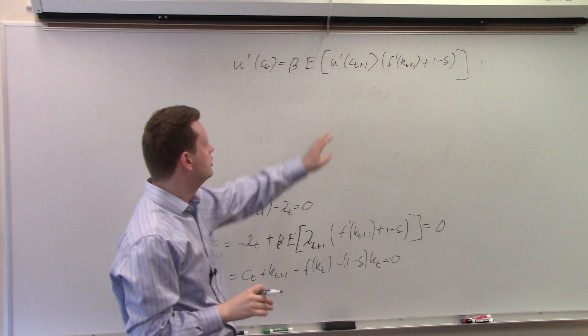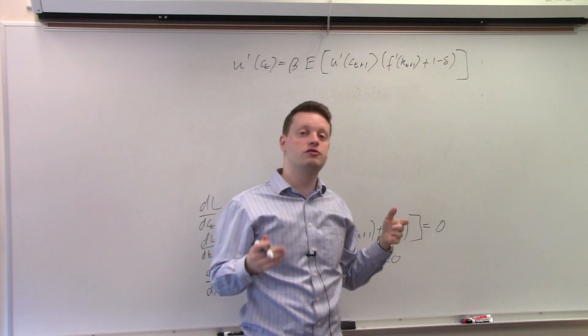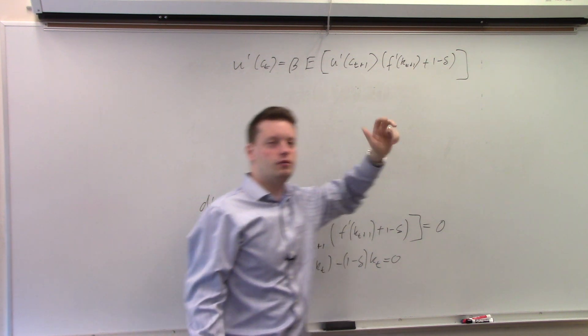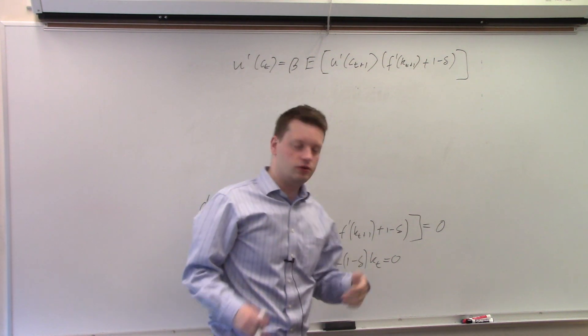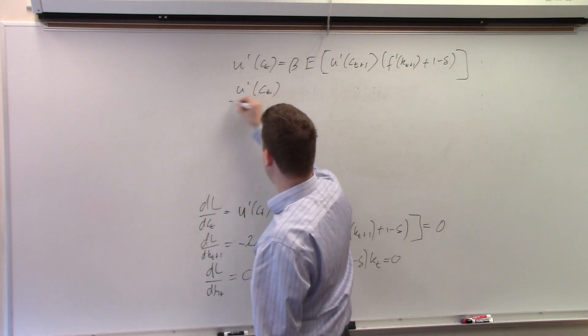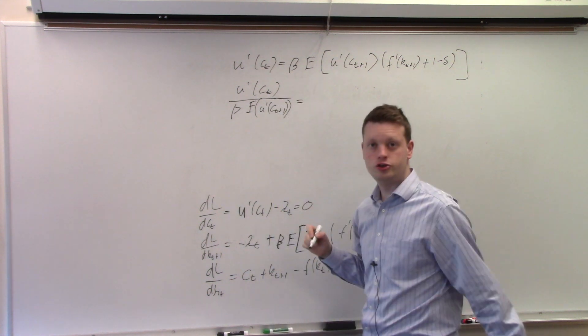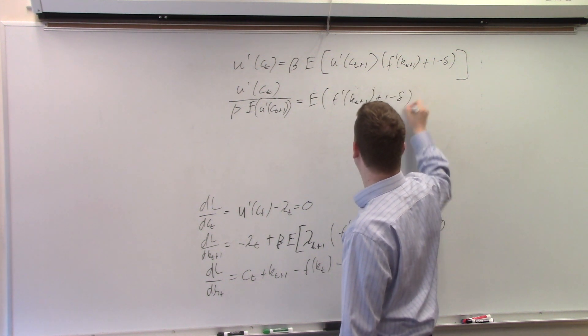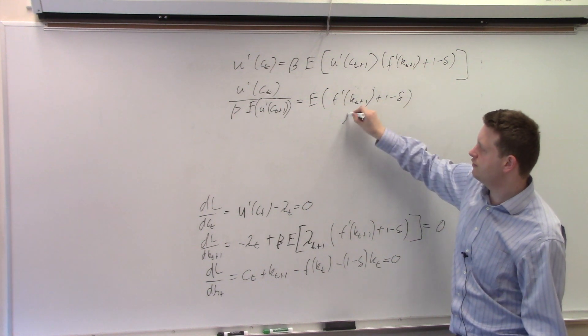Often it is assumed that u prime of c_{t+1} and this expression here to the right are independent. If the two are independent, then we can take the expectation of this term times the expectation of this term, which allows us to get much closer to the general Euler equation. So let's do that. And we get u prime of c_t over beta times E of u prime of c_{t+1} is equal to the expectation of f prime of k_{t+1} plus (1 minus delta). And we get this expression.